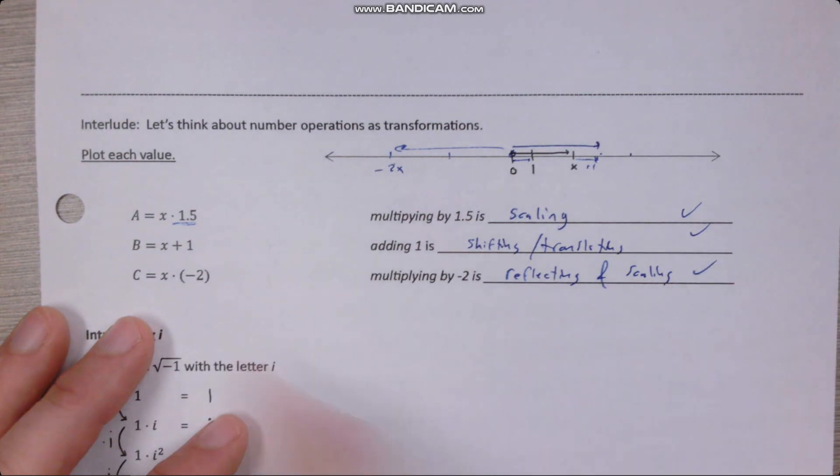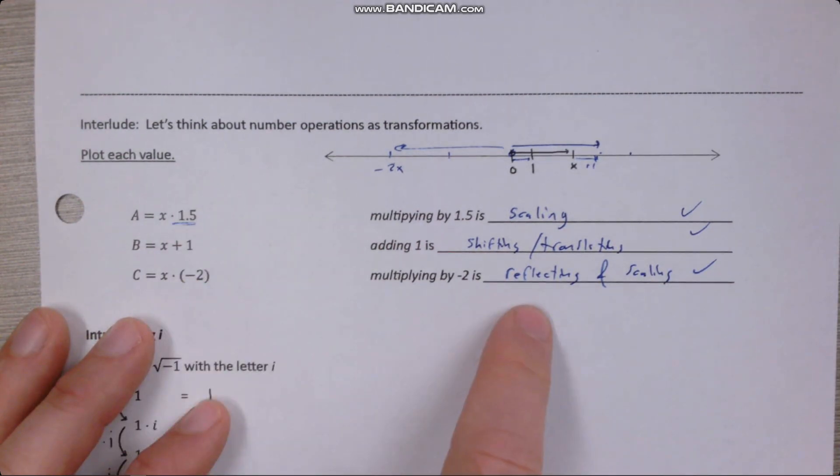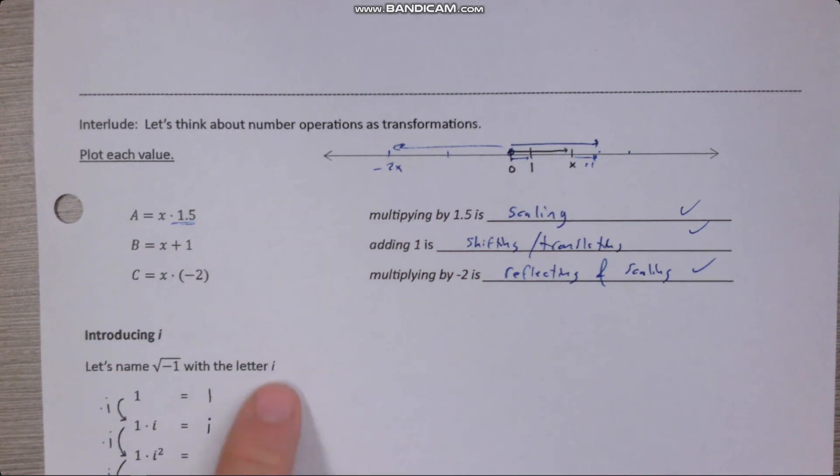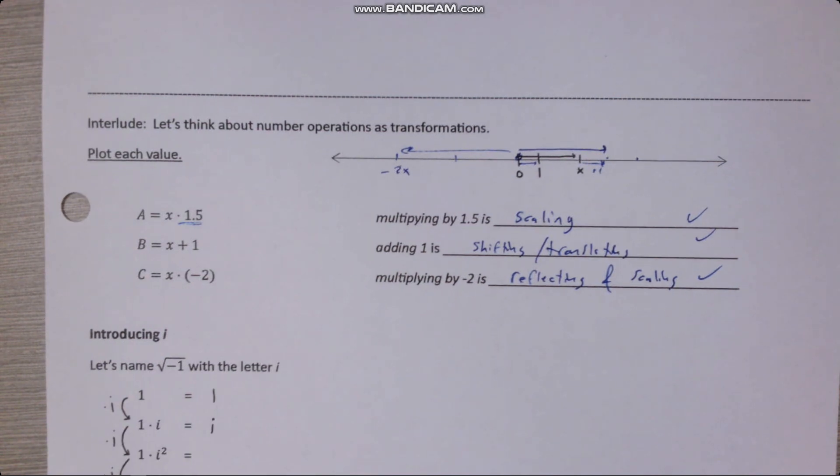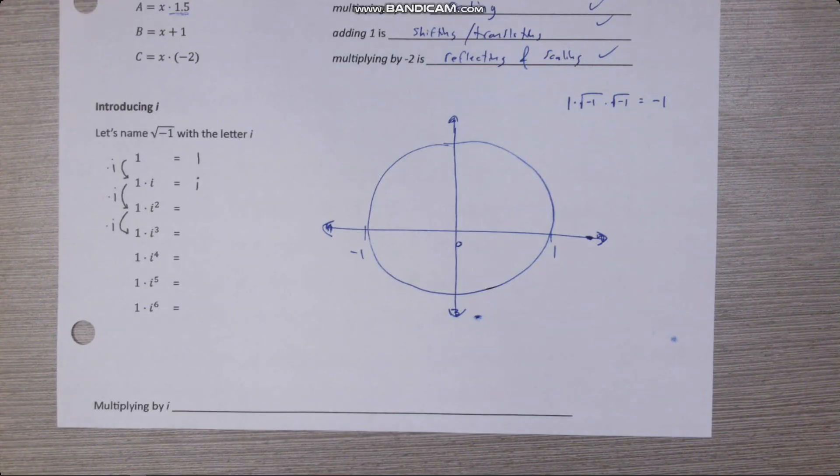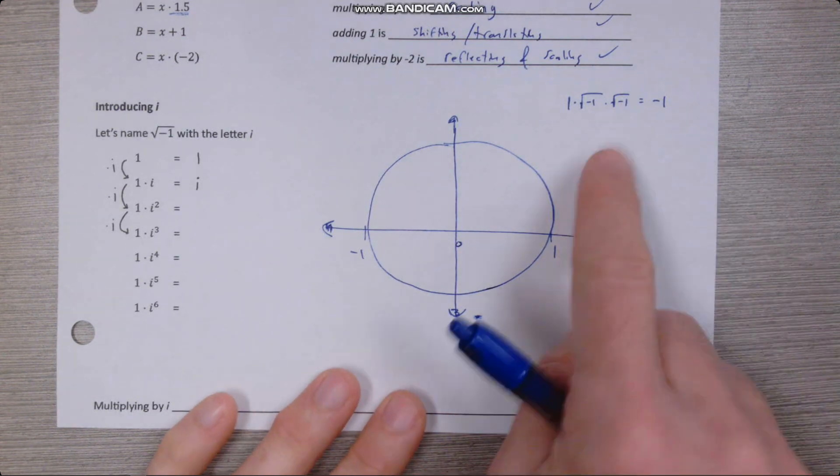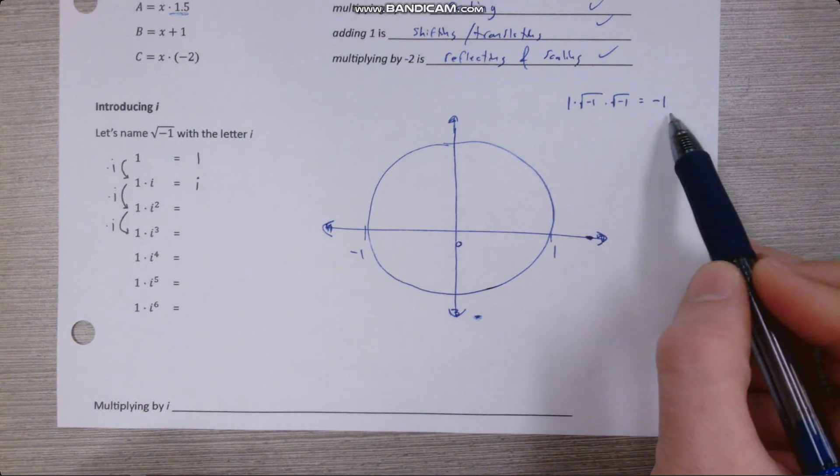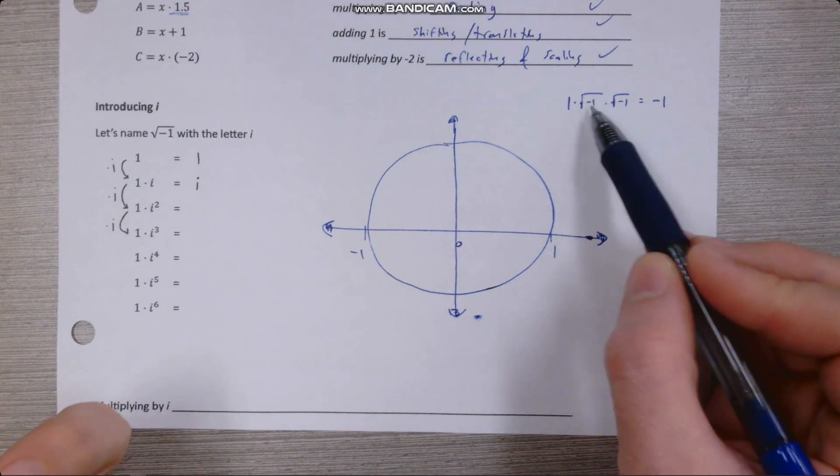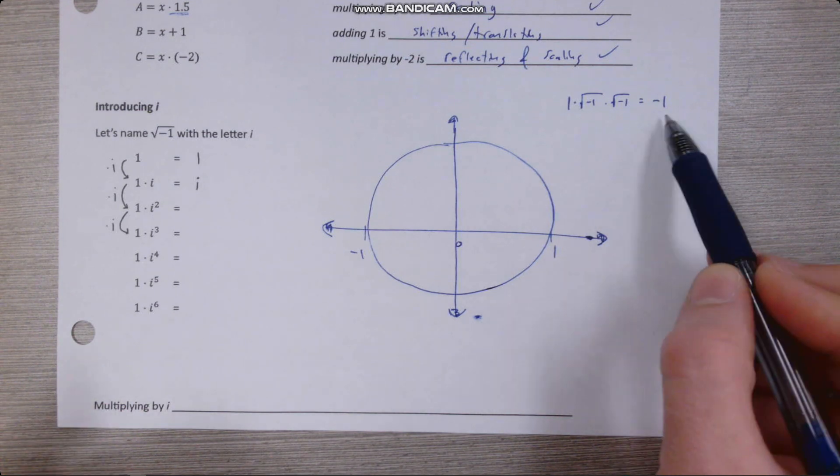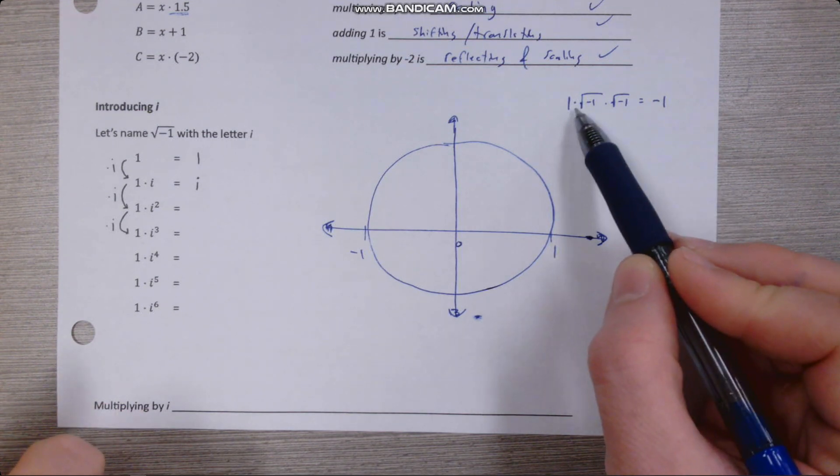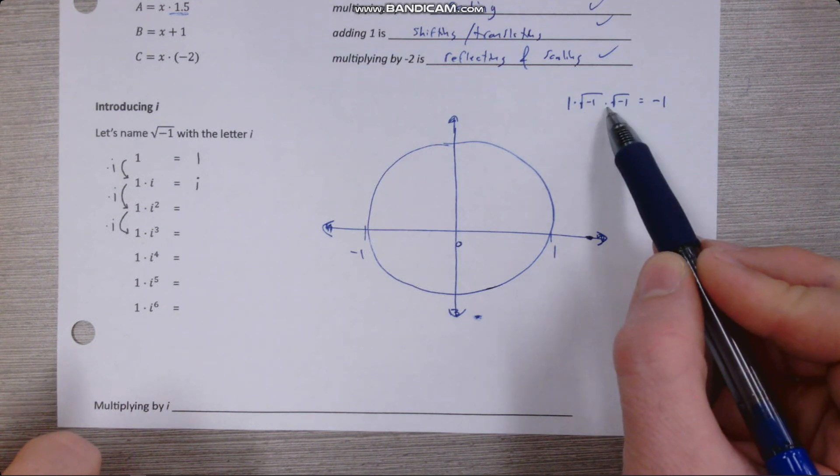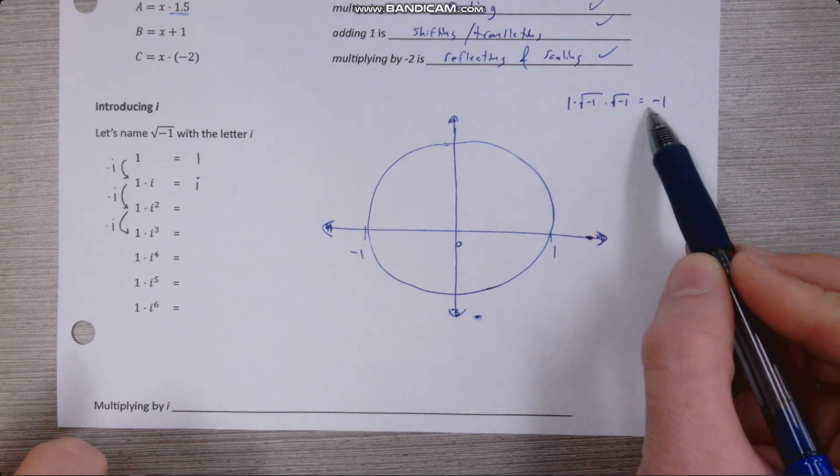Okay, so why am I having us think about numerical operations as if they're transformations? Because that's going to give us a good insight into what is this square root of negative one really about. What is it really doing? Okay, so we know from the equation up there that if x squared equals negative one, we should be able to plug in square root negative one and satisfy the equation. So in other words, if I have one and I multiply it by root negative one, and then I multiply it again by root negative one, that should give me negative one.